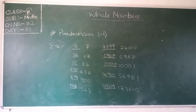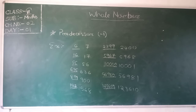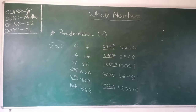Predecessor means the before number. The predecessor of 636 is 636 minus 1 equals 635. Similarly, the predecessor of 900 is 899. The predecessor of 1568 is 1567. And the predecessor of 2400 is 2399. Similarly, the predecessor of 5,968 is 5,967.